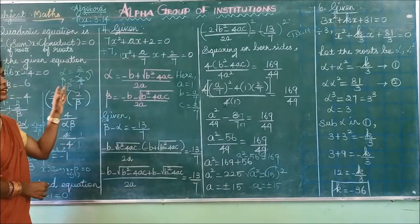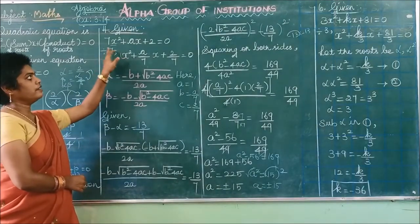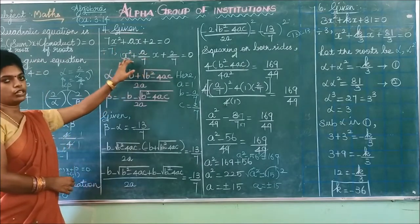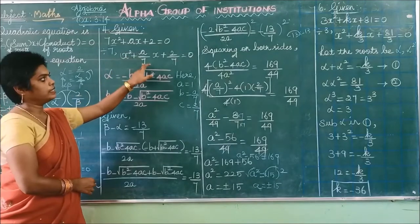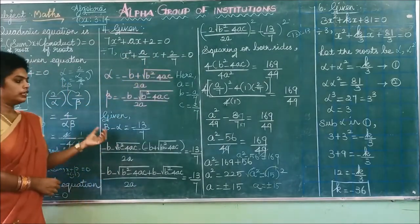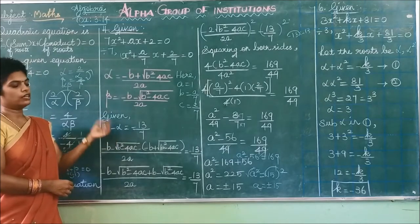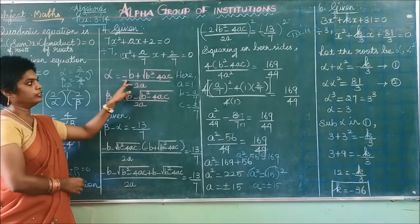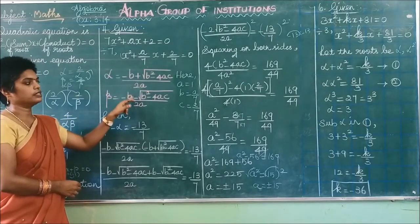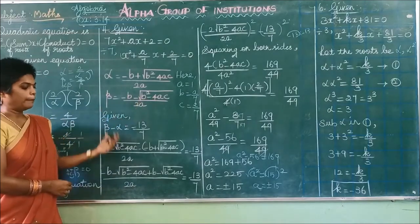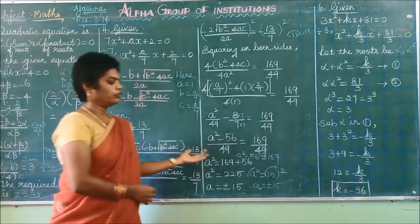To summarize problem 4: write the equation 7x²+Ax+2=0, divide by 7, use the quadratic formula to express alpha and beta, apply the condition β−α = −13/7, square both sides, substitute the coefficient values, and solve to find A = ±15.